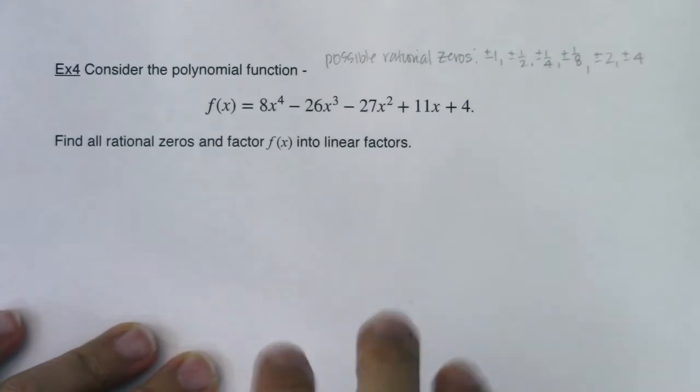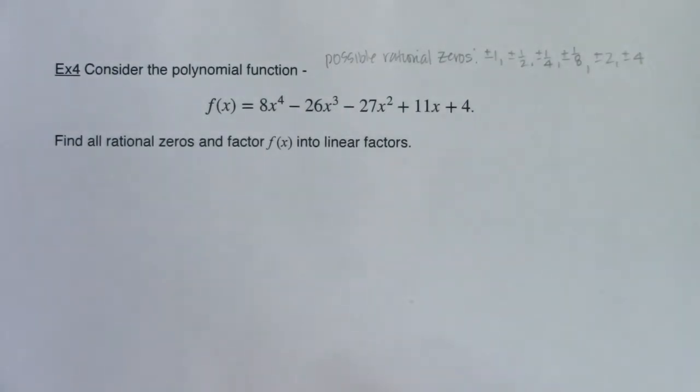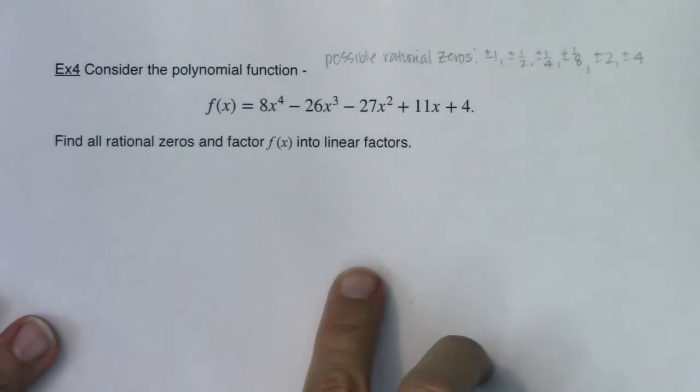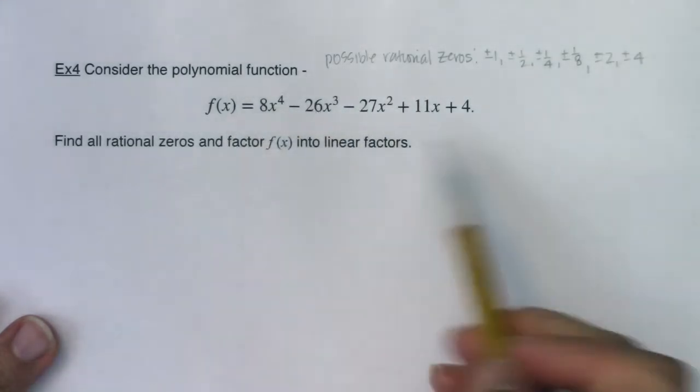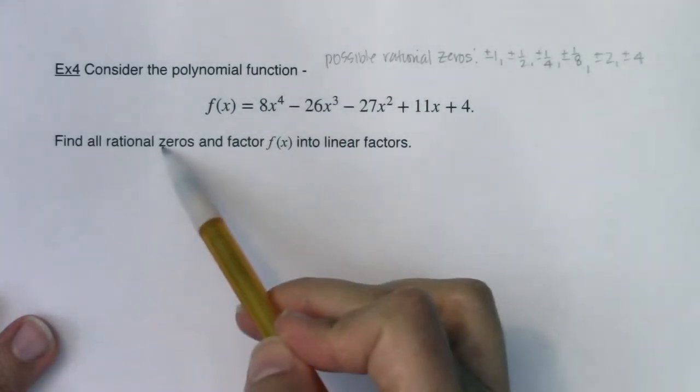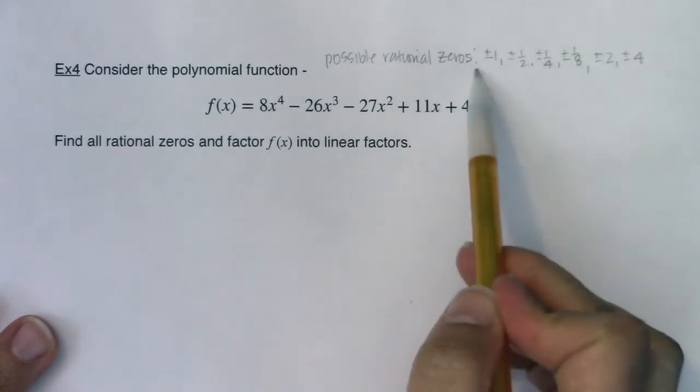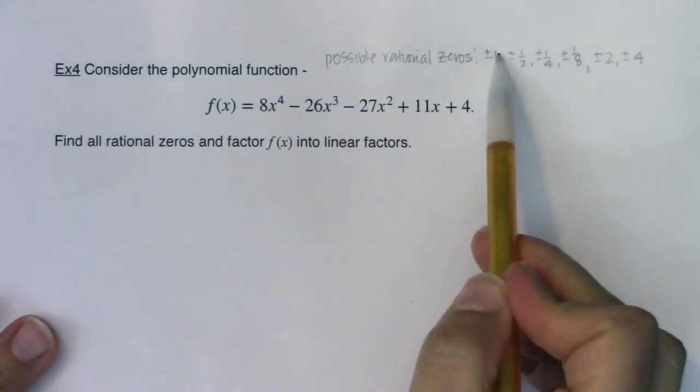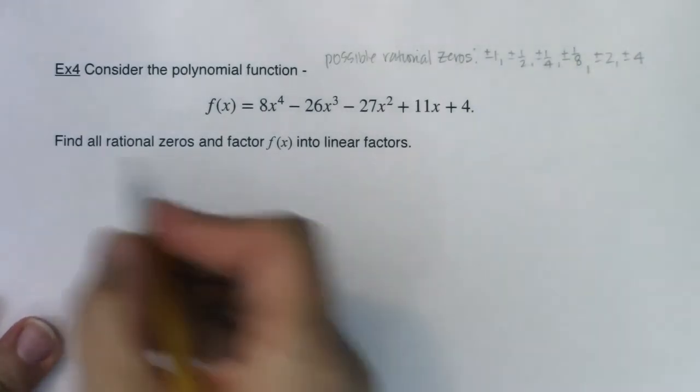I'm going to attempt this without my calculator and it's going to take me a while to do it, but I want to show you what this looks like and then I want to show you how your calculator can help you get to the answer faster. I'm still going to want to see all the algebra, but at least it'll narrow down your search. I'm going to go without my calculator. If there is a rational zero, it's in this list somewhere.